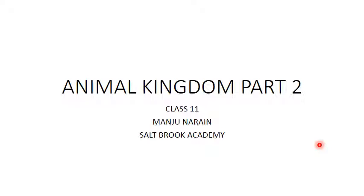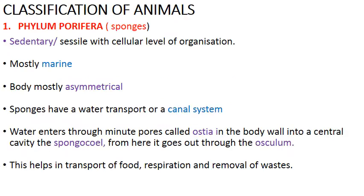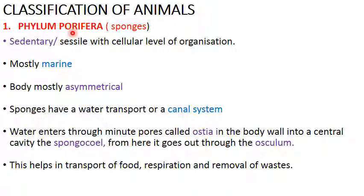We are going to start the next part of this chapter on animals, beginning with the actual classification of animals. The first group in the kingdom Animalia is Phylum Porifera, and commonly in this phylum what we call sponges. Porifera means pore-bearing animals — pore meaning small holes in their body.